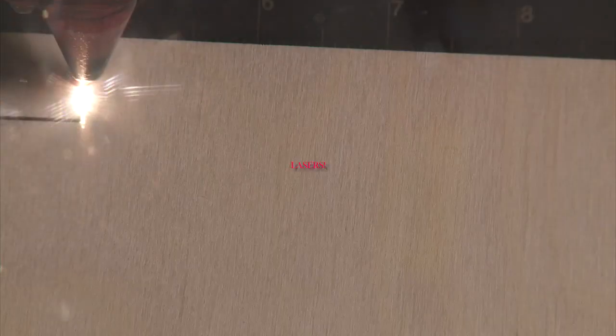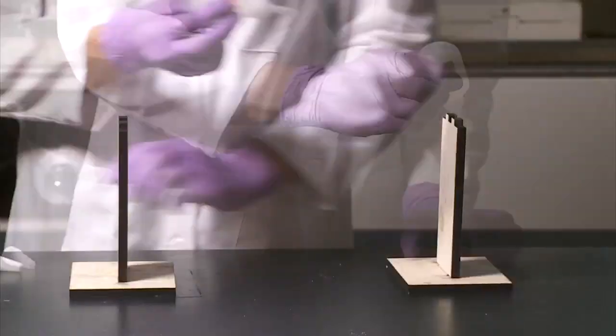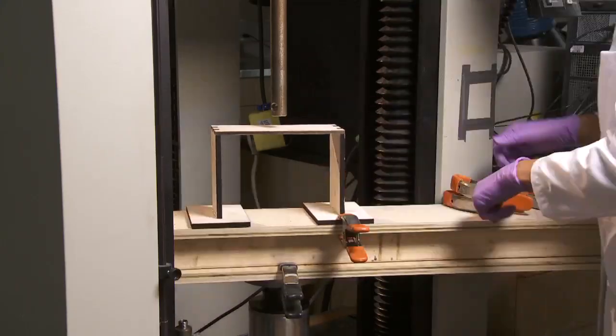Here we are using lasers to build model bridges out of balsa wood and plywood. Always wear purple gloves while handling balsa wood. Safety first, kids. You can see the simple design.